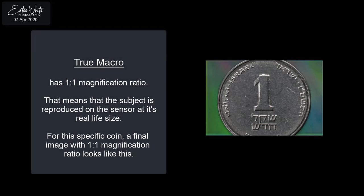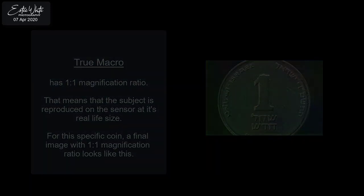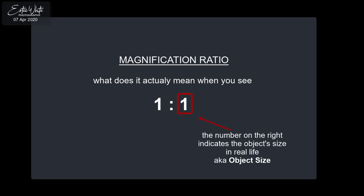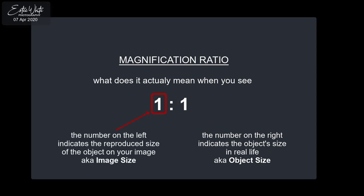True macro has a one-to-one magnification ratio. That means the subject is reproduced on the sensor at its real life size. For this specific coin, a final image with one-to-one magnification ratio looks like this. You've probably seen magnification ratios written many times — numbers like one-to-one, five-to-one, or one-to-five. The number on the right indicates the object size in real life, and the number on the left indicates the reproduced size of the object on your image.